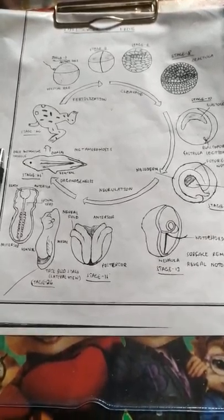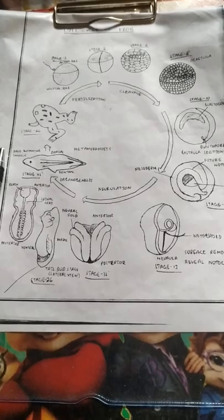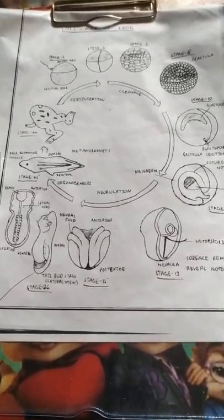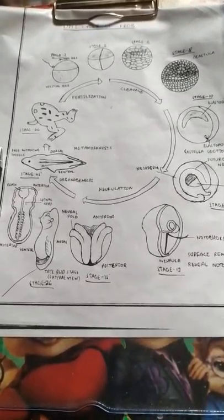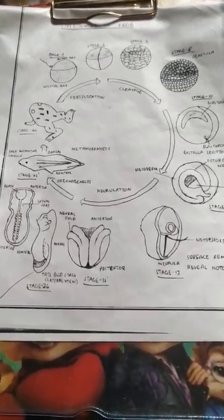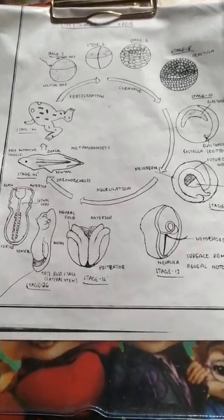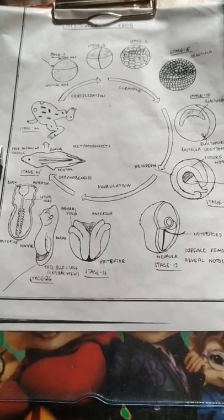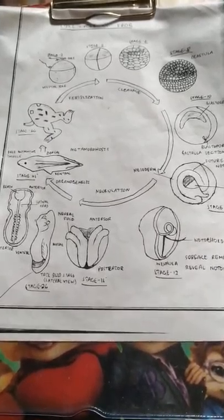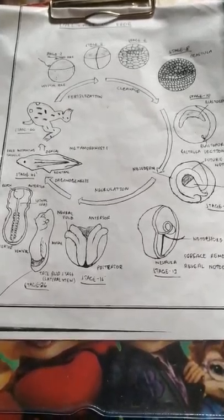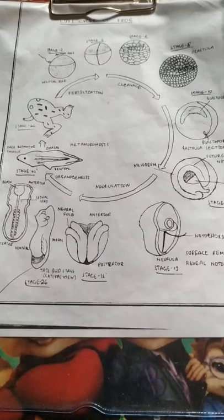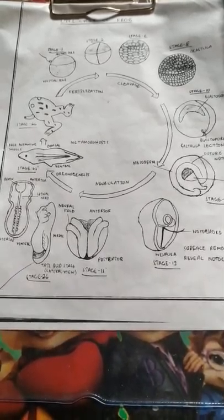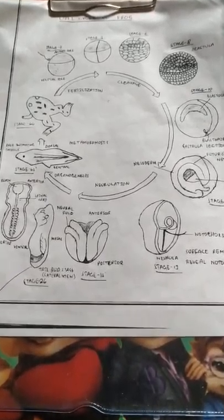First is fertilization. Frogs usually have external fertilization. External fertilization means the fertilization occurs outside the body, where the male releases sperms and the female releases ovum into the water, and fertilization occurs in the water. That type of fertilization is called external fertilization.